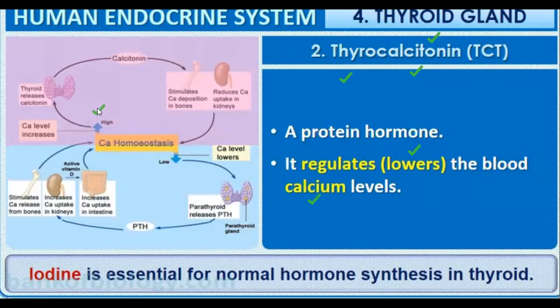When calcium levels are high in the blood, thyrocalcitonin is secreted to lower them. When calcium is low, the parathyroid hormone helps bring calcium back to the normal level. Iodine is essential for normal thyroid hormone synthesis and regulates the proper amount of thyroid hormones in our body.